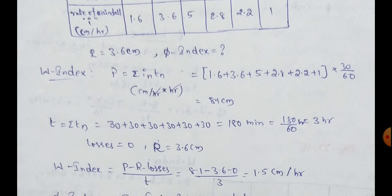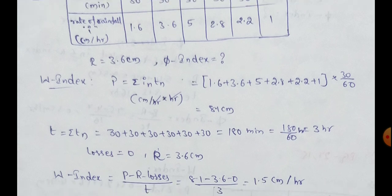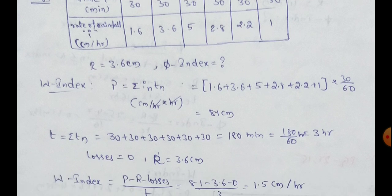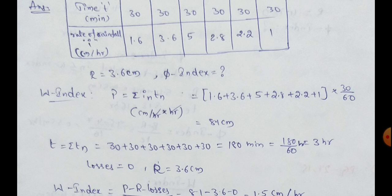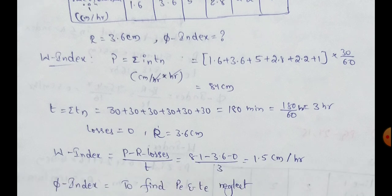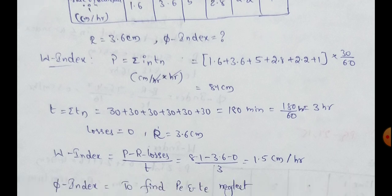Next, T. Sigma tn. We have to add total time values. That means, 6 times 30 minutes, 180 minutes. That means, 3 hours. Next, losses are 0. R value, runoff value, 3.6 cm.